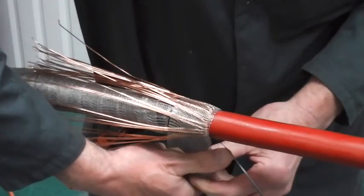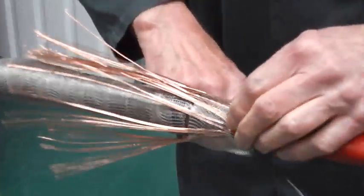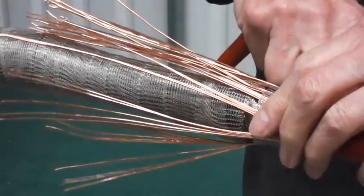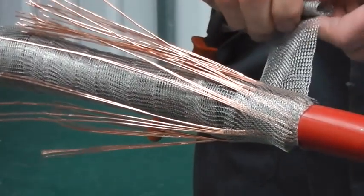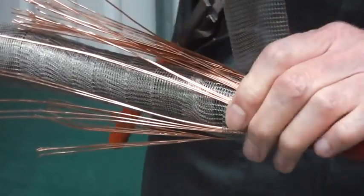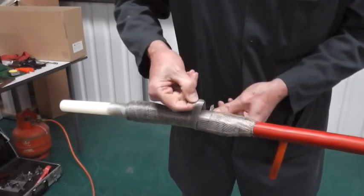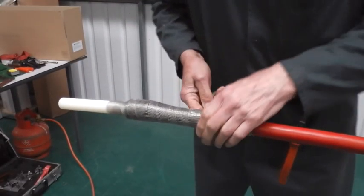Now bend back the screen wires upon the core and apply more mesh so that there's really good contact between the two. Keep applying the mesh right over the pot end and secure.